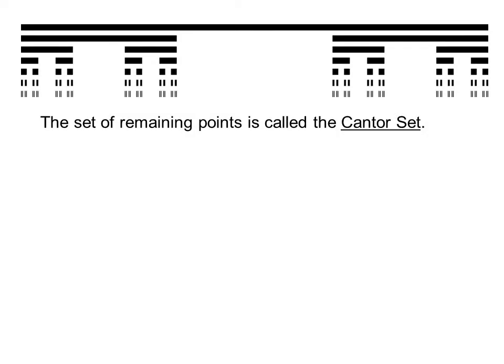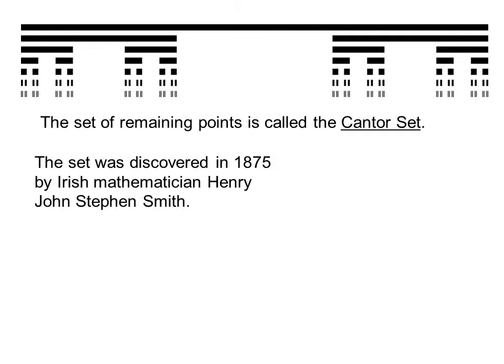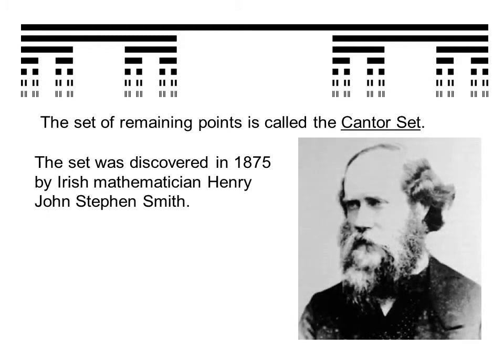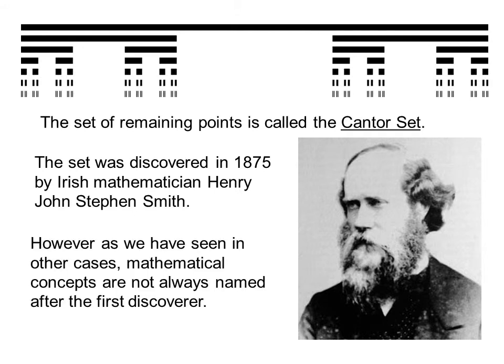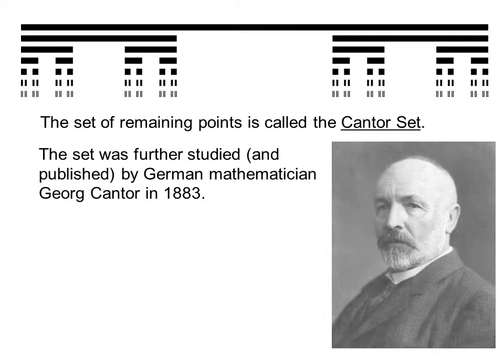The set of remaining points is called the Cantor Set. The set was discovered in 1875 by Irish mathematician Henry John Stephen Smith. However, as we have seen in other cases, mathematical concepts are not always named after the first discoverer. The set was further studied and published by German mathematician Georg Cantor in 1883.